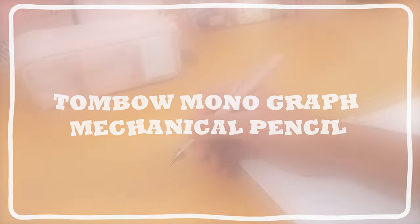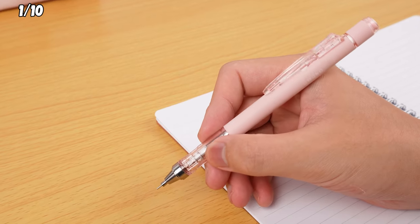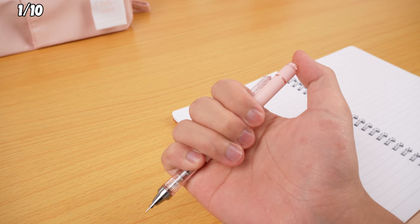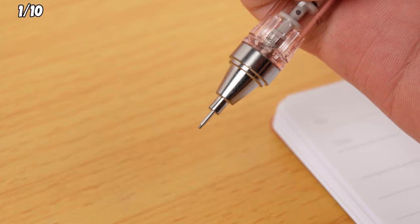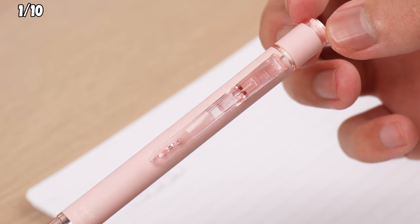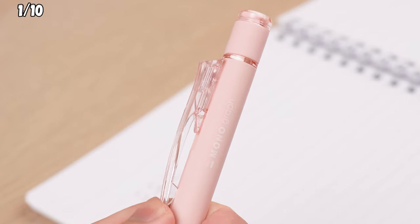Tombow Monograph Mechanical Pencil. It's a boss pencil. You can extend the lead by either shaking it or pushing it. But here's the twist. It's not the usual click at the end. It's all about pressing the clip. Need some peace and quiet? Just push up the clip to lock it in place.